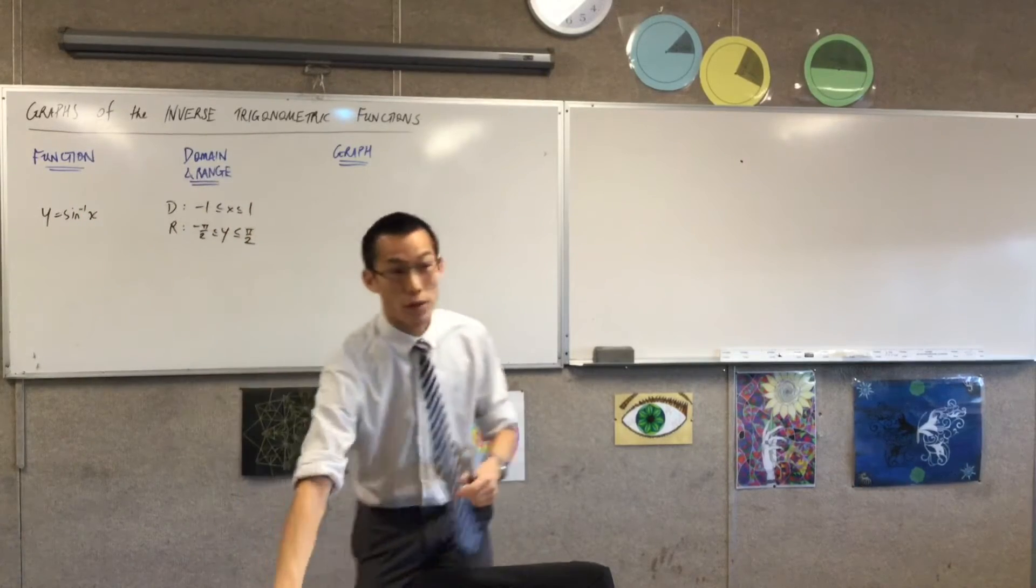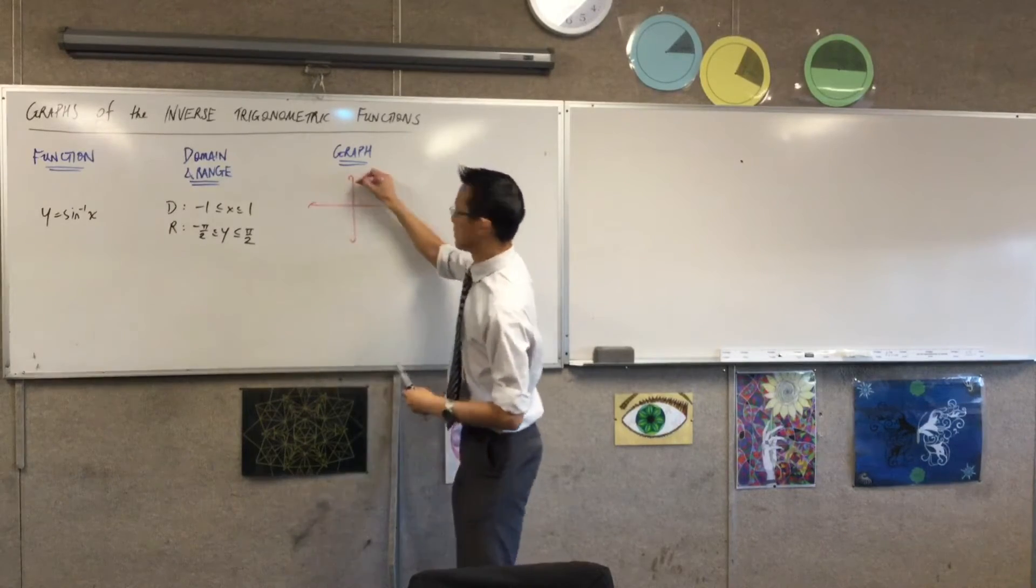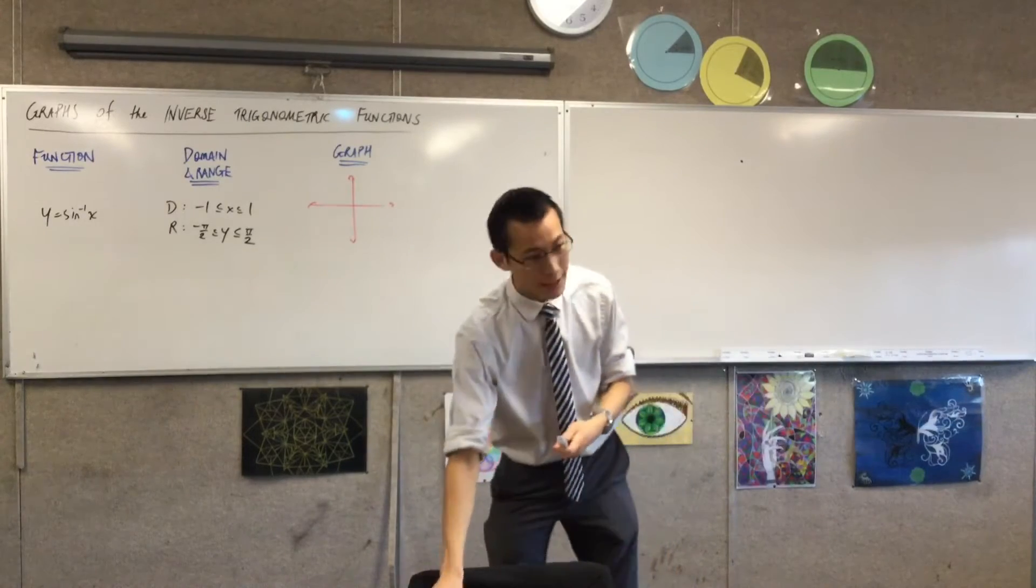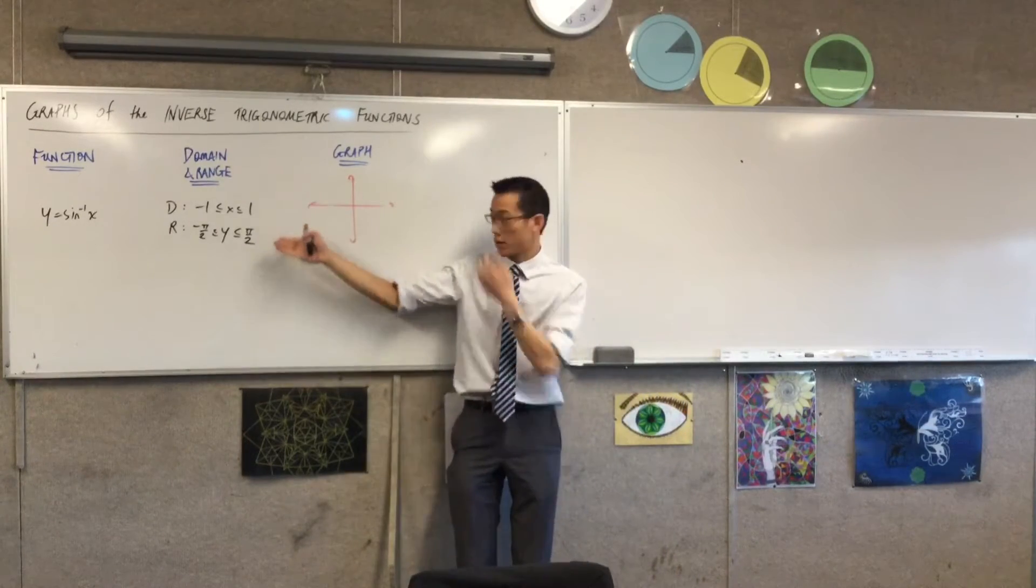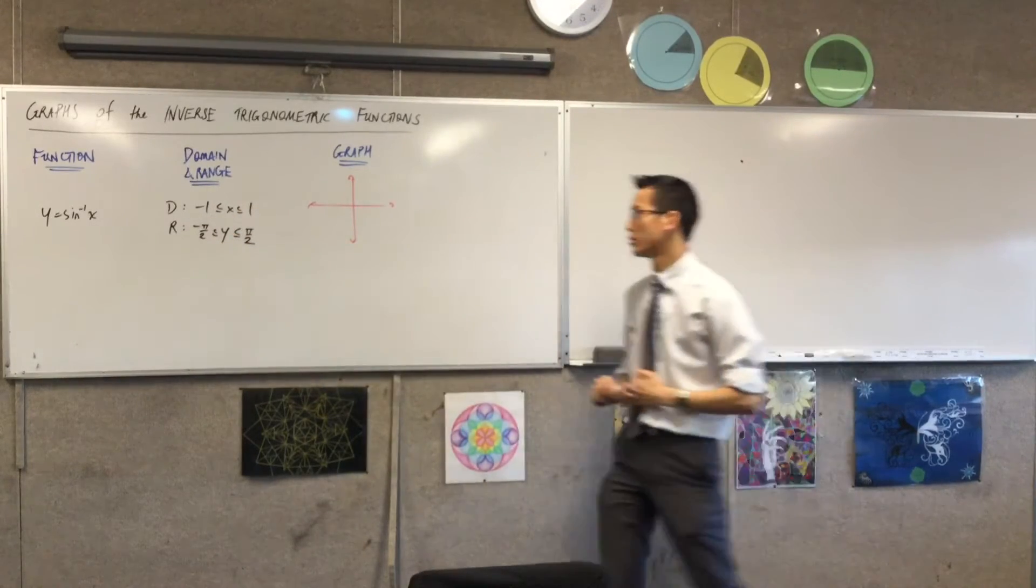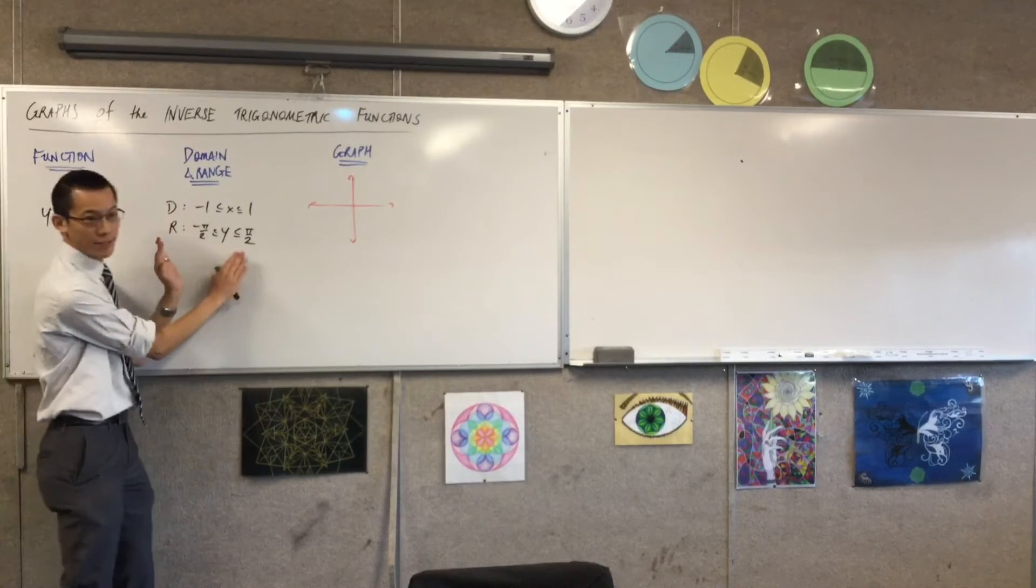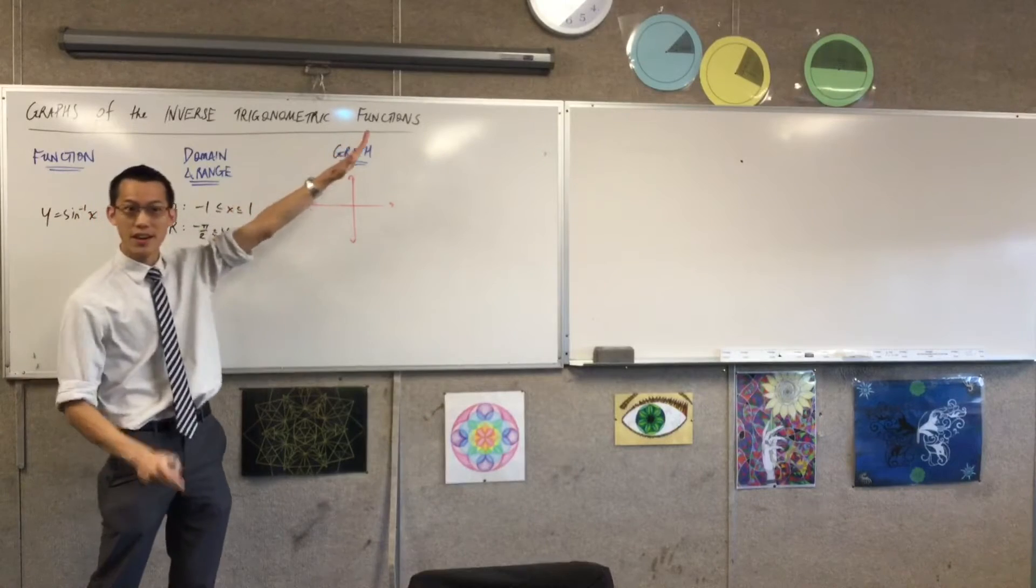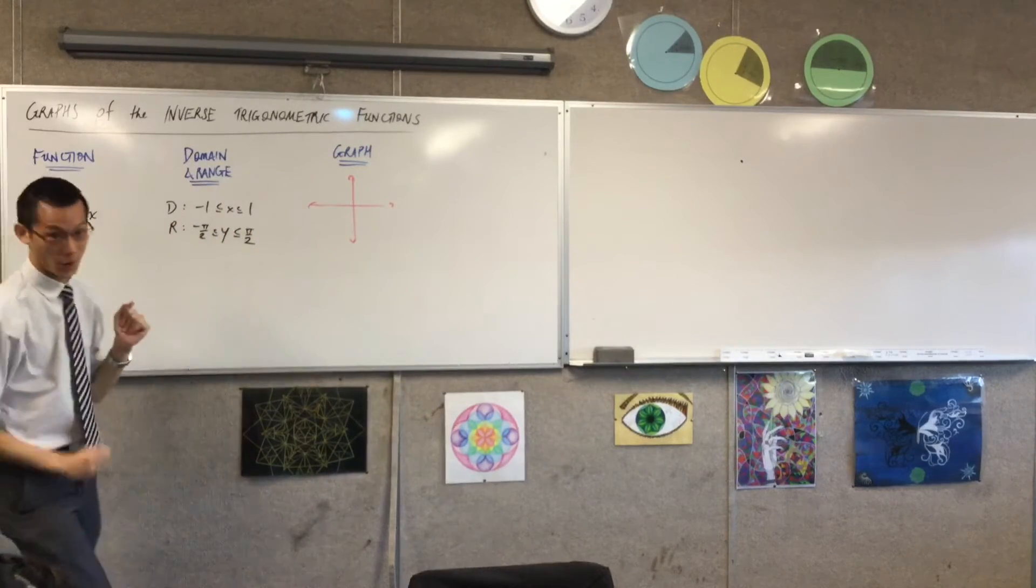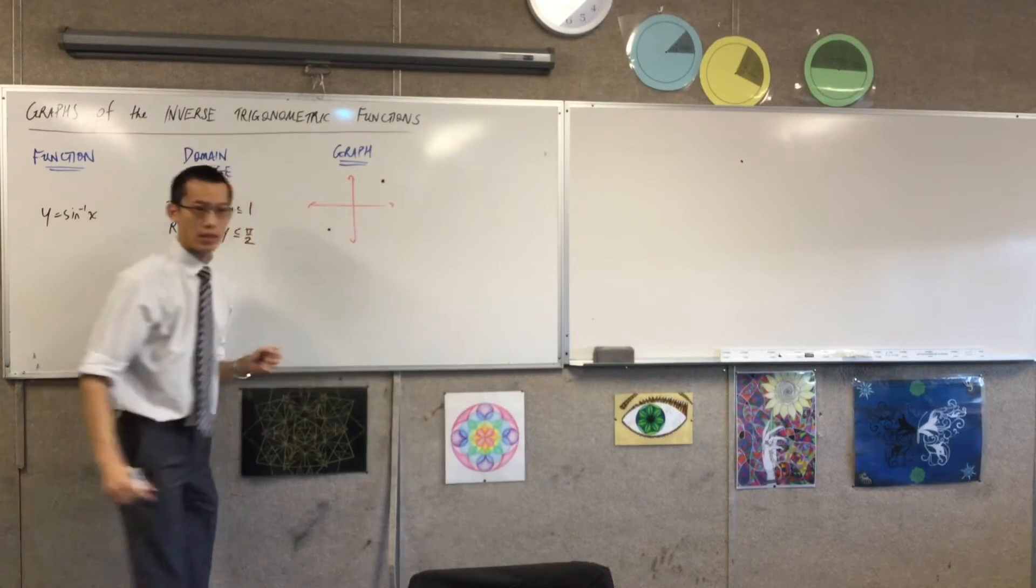What does our graph look like? This is going to be an odd function—your domain, range, and the function itself are all nice and symmetrical. Just like the original sine function in this domain was an increasing function, the inverse of an increasing function is also an increasing function. That's why we're coming up from here to here.